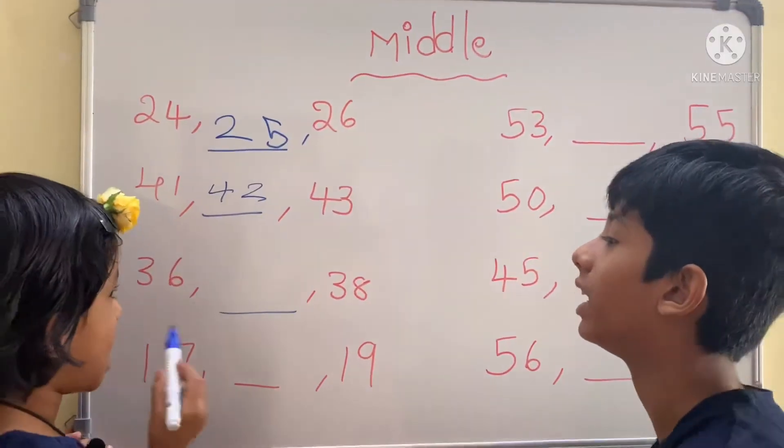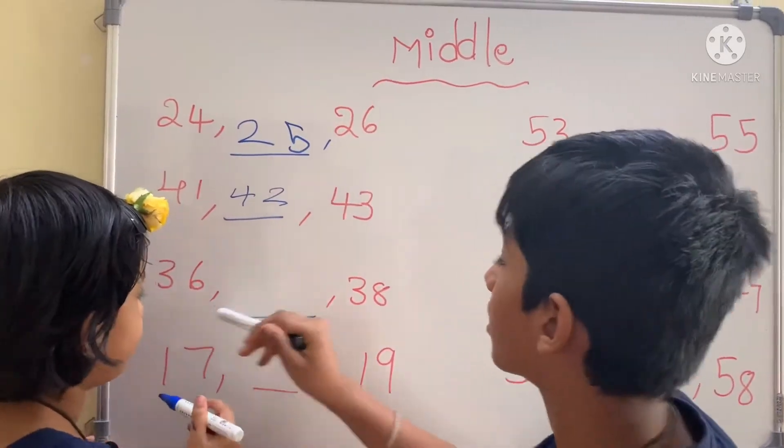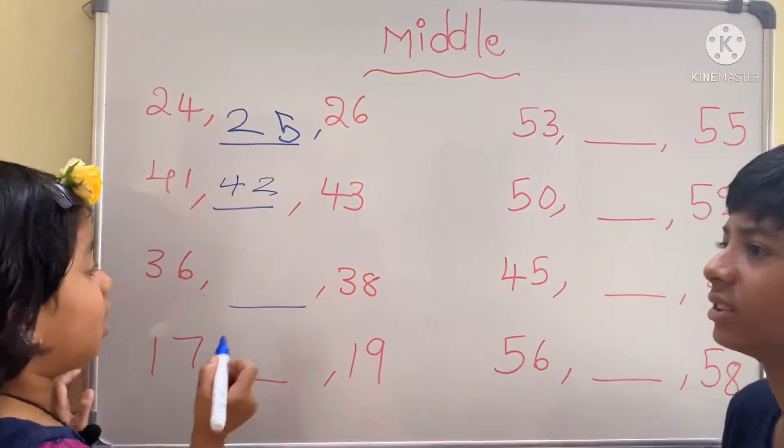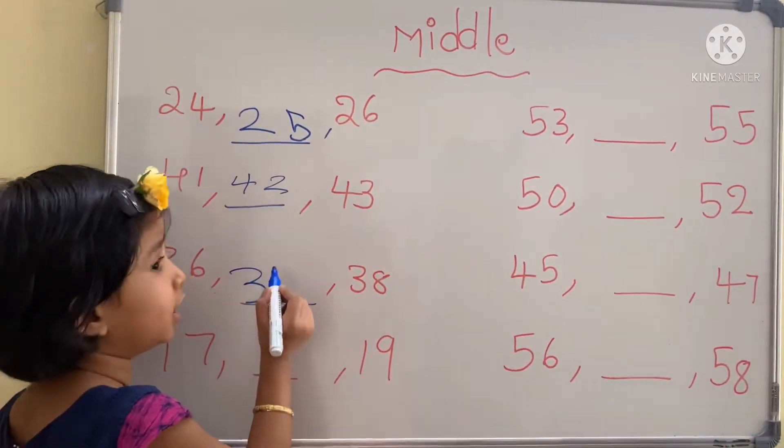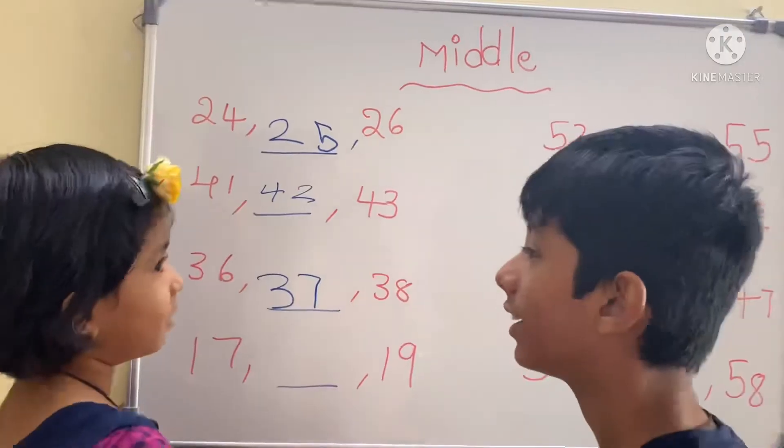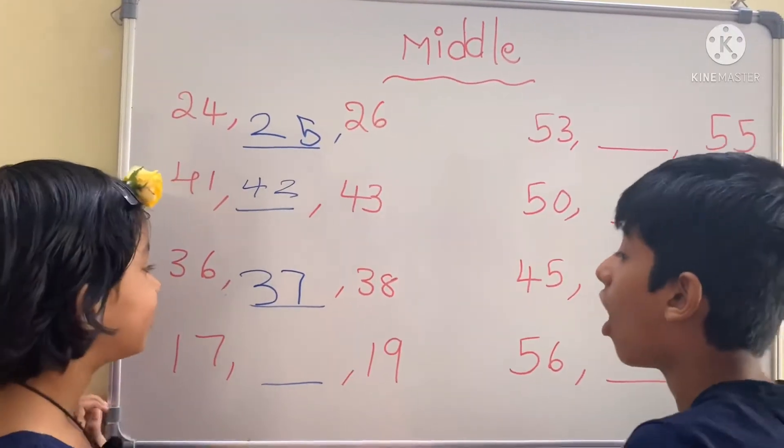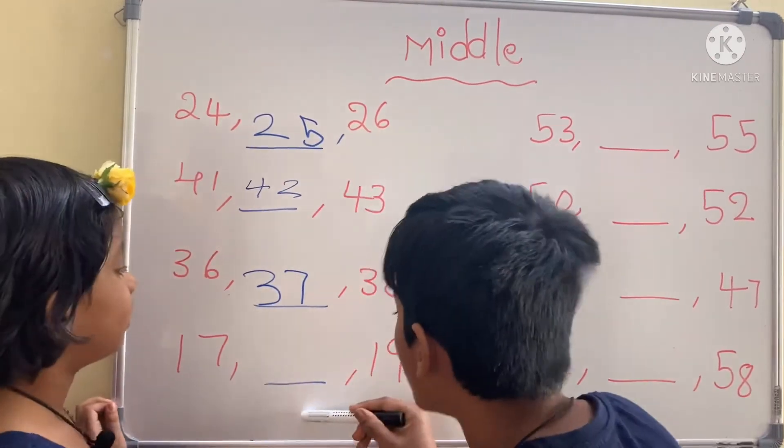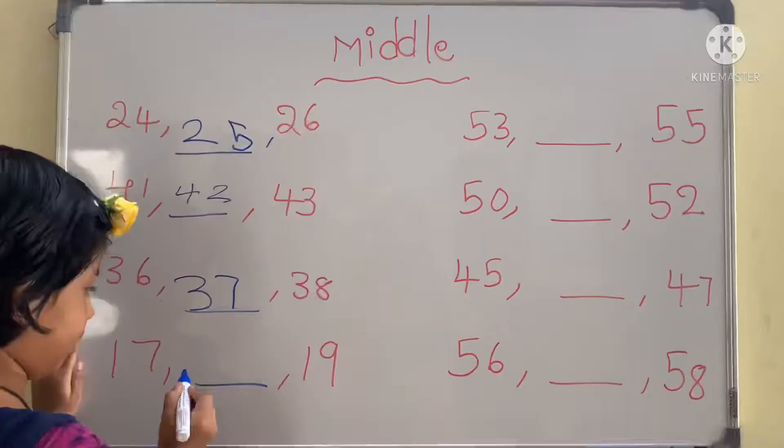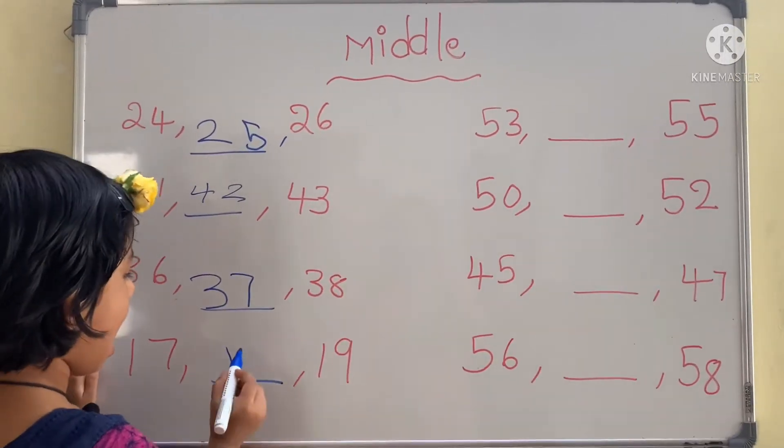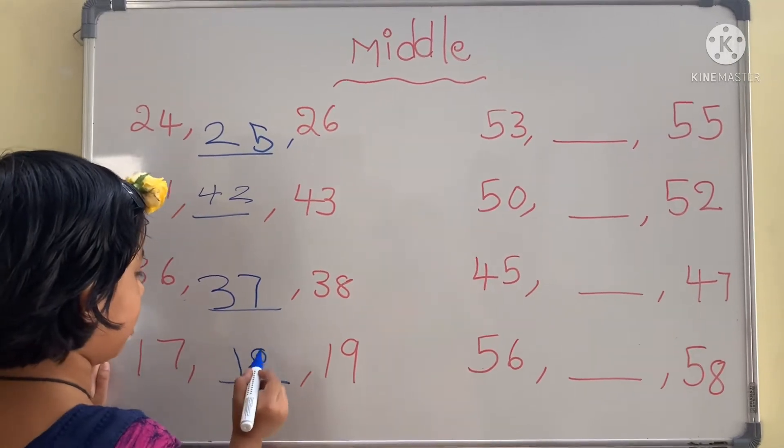What number is in the middle of 36 and 38? 37. What is in the middle of 17 and 19? One ten, eight ones, 18.